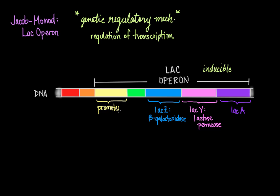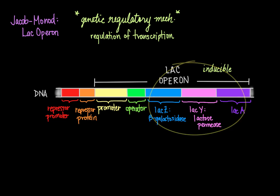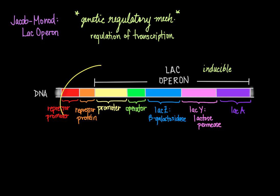The two regulatory sequences are the promoter, which promotes the transcription of structural genes, and the operator. There are also two other regulatory sequences that lie just upstream of the LAC operon: genes that encode for a repressor protein, and the associated promoter for that repressor protein. So the structural genes are here, and then here are the regulatory genes.